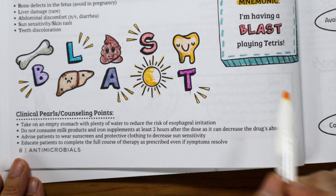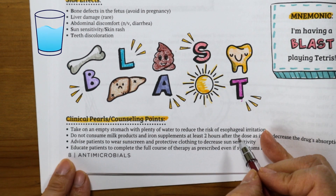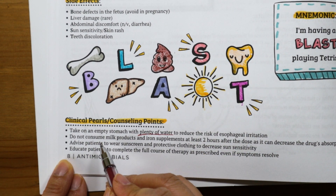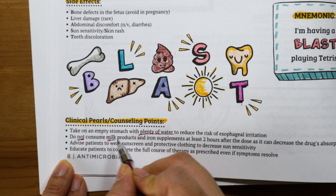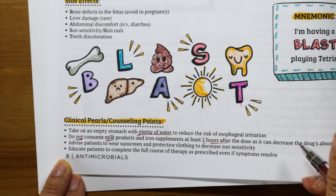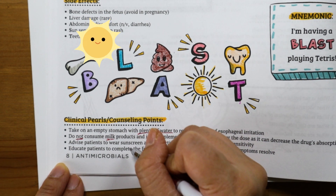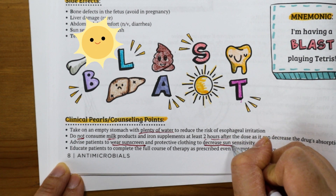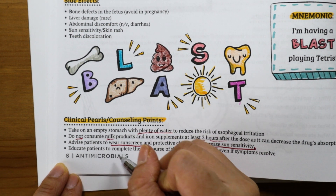Some important counseling points to keep in mind: you want to take tetracycline antibiotics on an empty stomach with plenty of water to reduce the risk of esophageal irritation. Do not consume milk products and iron supplements at least 2 hours after the dose, as they can bind to tetracycline antibiotics and decrease the drug's absorption. Advise your patients to wear sunscreen and protective clothing to decrease the risk of sun sensitivity.